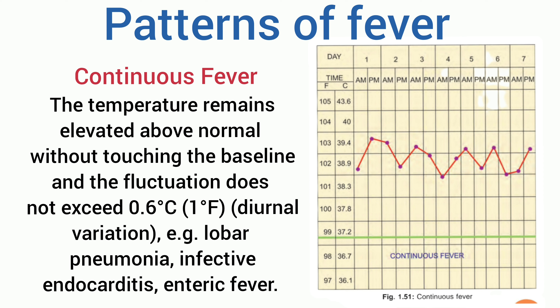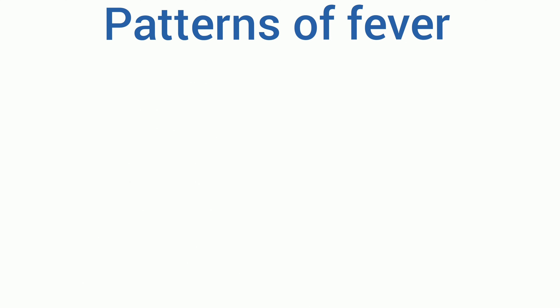First, sustained fever: the temperature remains elevated above normal without touching the baseline, and the fluctuation does not exceed 0.6°C, that is 1°F. It is seen in lobar pneumonia, infective endocarditis, and enteric fever.